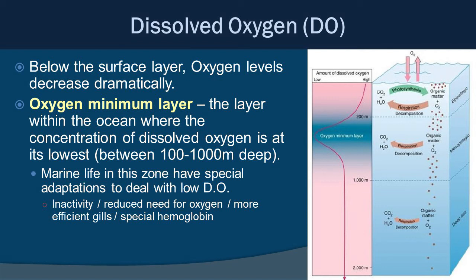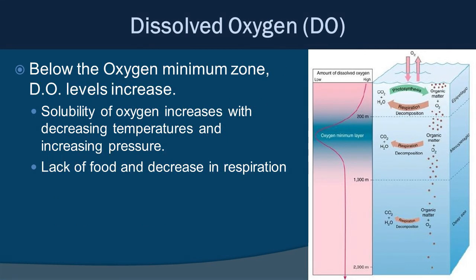Why does oxygen get so low here? You are below the photic zone — there's not enough sunlight for photosynthesis, so no oxygen is being added through that process. You're also far from the surface, so no oxygen is being added through surface turbulence. But there's still a lot of marine life going through cellular respiration, taking away oxygen. Below the oxygen minimum zone, dissolved oxygen levels actually increase, because oxygen solubility increases with decreasing temperature and increasing pressure, and there's also a lack of food and thus less respiration — there's simply less marine life down there.